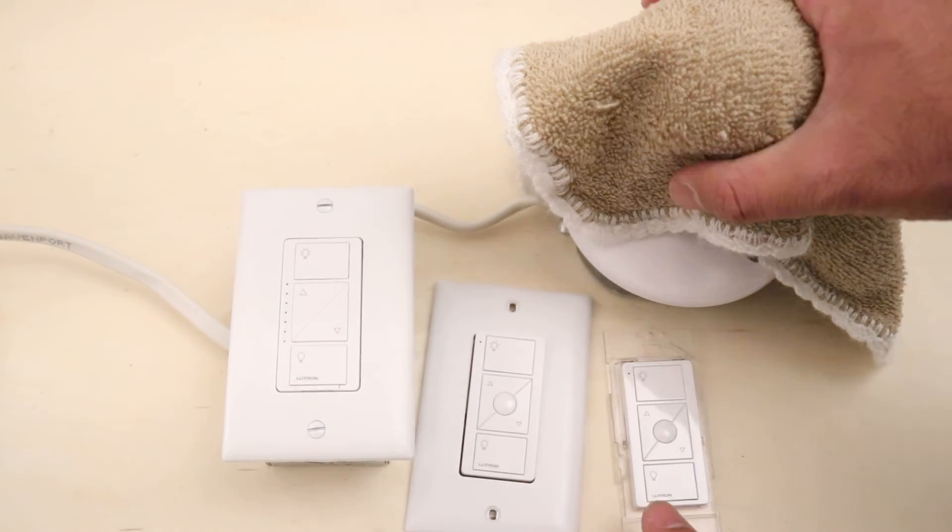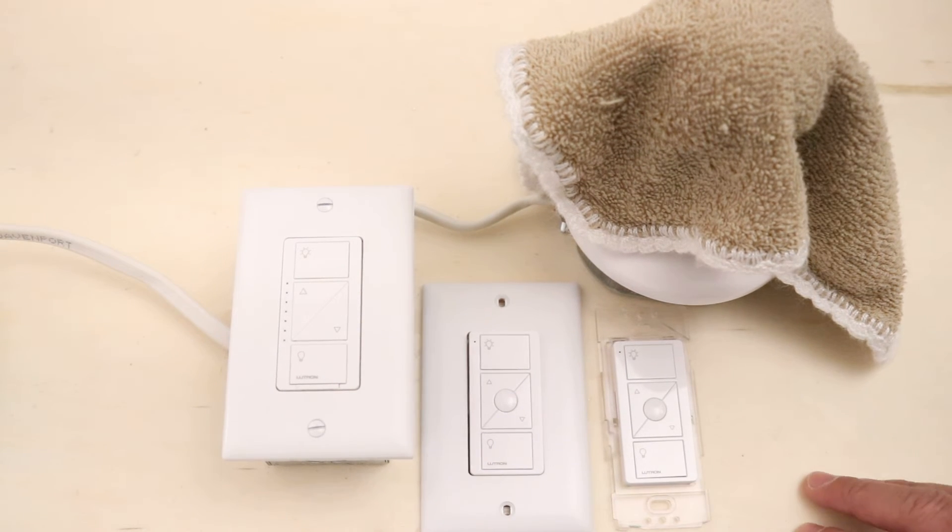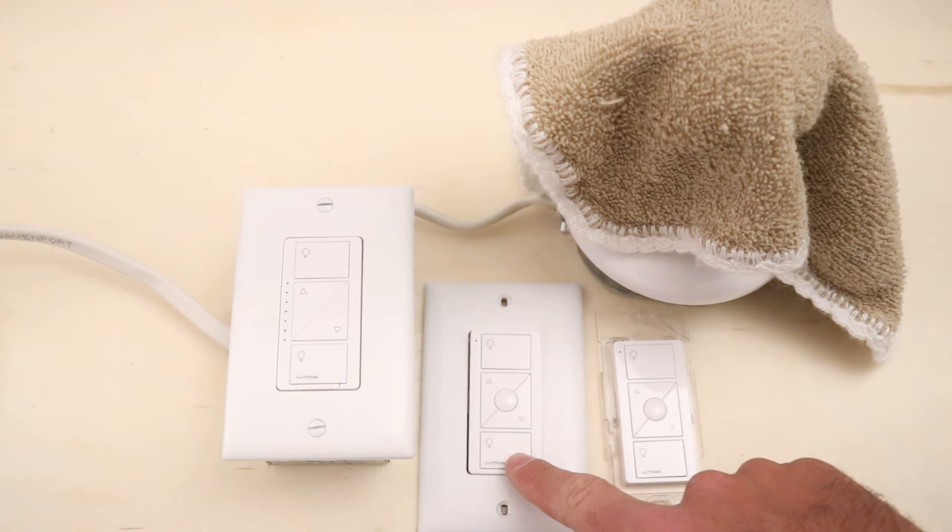And that is how you make a three-way switch. And then to make a four-way switch with the Lutron Caseta dimmer, all you have to do is repeat the process again, put it in pairing mode and add the next dimmer, which we have already done.